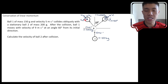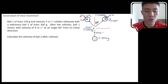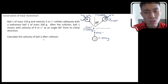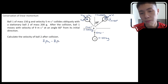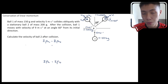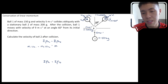The question asks us to calculate the velocity of ball 2 after the collision. This is a classic conservation of linear momentum problem. We conserve the x-momentum and the y-momentum separately. The x-component equation gives: m1·ux1 + m2·ux2 = m1·vx1 + m2·vx2.